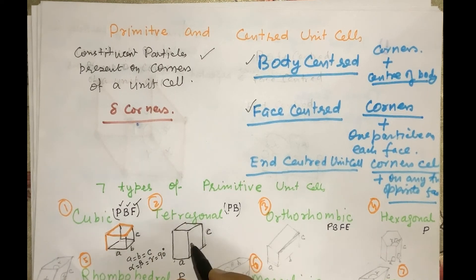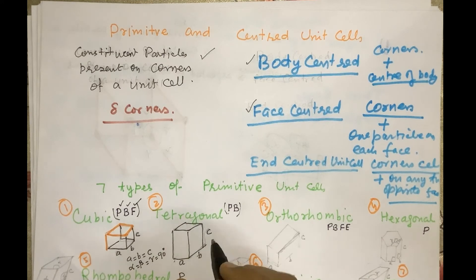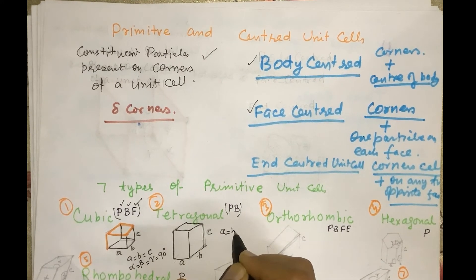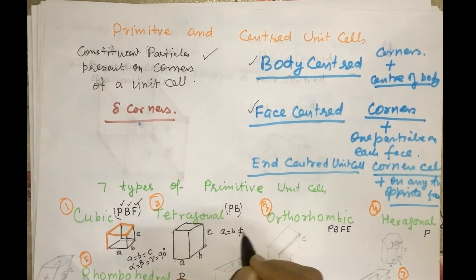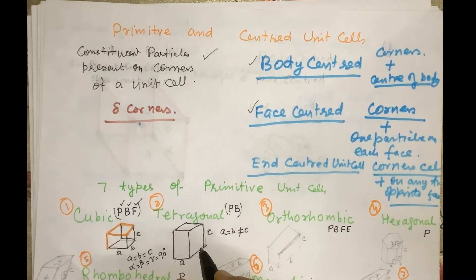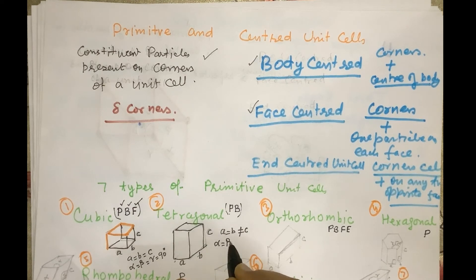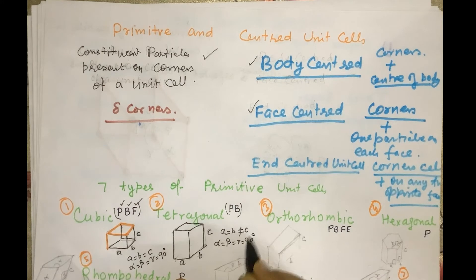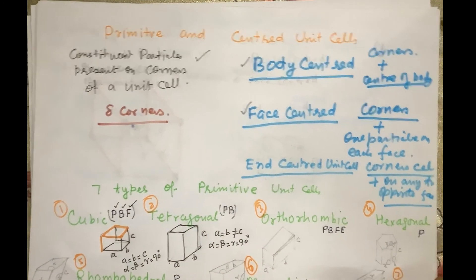In tetragonal, A equals B but they are not equal to C — C is of different length — and all the angles are 90 degrees. Tetragonal is possible only in primitive and body-centered forms.